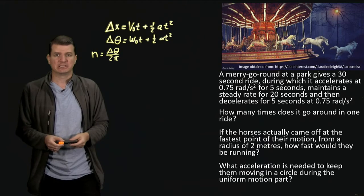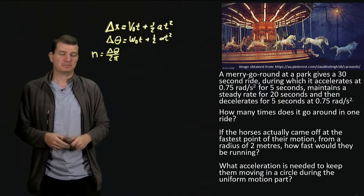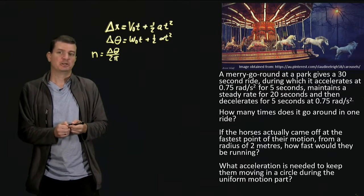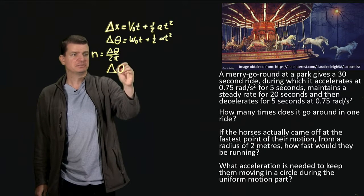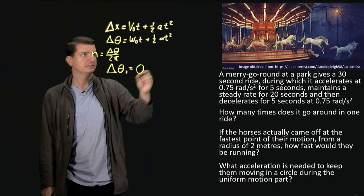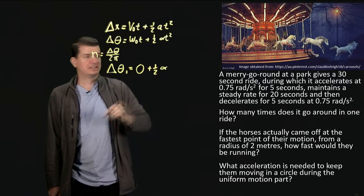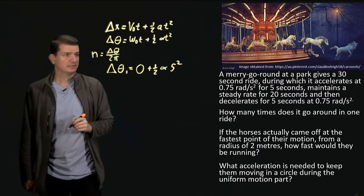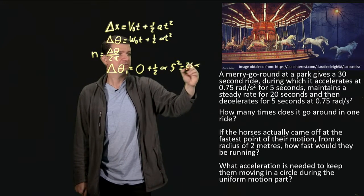These equations only hold for constant, uniform acceleration. Accelerating, then cruising, then decelerating is clearly not constant overall — but each of those three pieces individually is. So we'll handle each part separately. For the first part, delta theta 1, we start from rest so initial angular velocity is zero, and we accelerate with alpha for five seconds. That gives us one-half alpha times five squared, which is 25α/2.